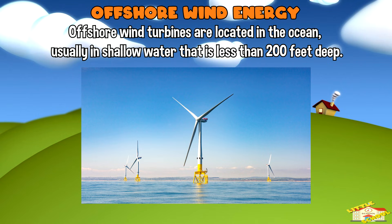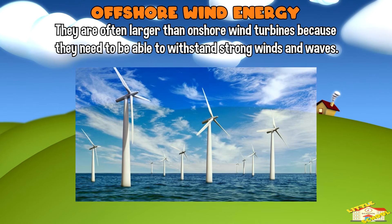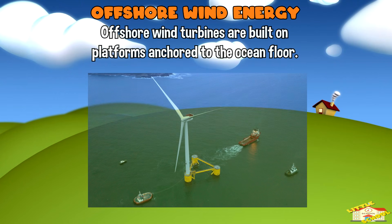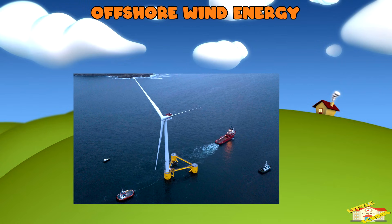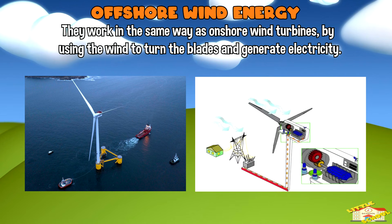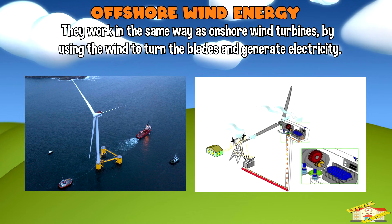Offshore wind turbines are located in the ocean, usually in shallow water that is less than 200 feet deep. They are often larger than onshore wind turbines, because they need to be able to withstand strong winds and waves. Offshore wind turbines are built on platforms anchored to the ocean floor, and they work in the same way as onshore wind turbines, by using the winds to turn the blades and generate electricity.